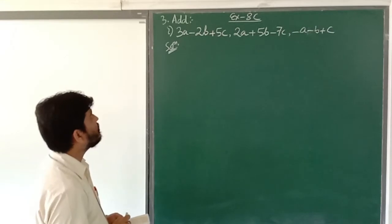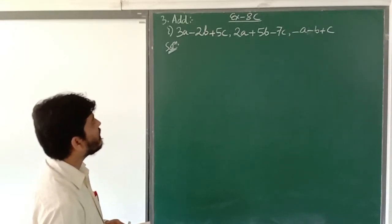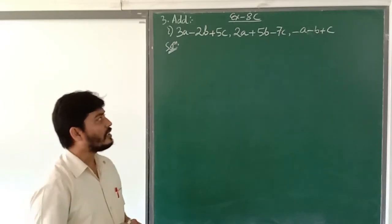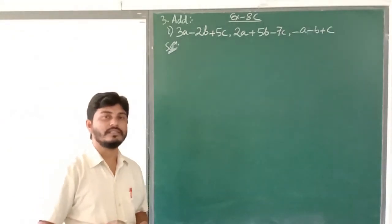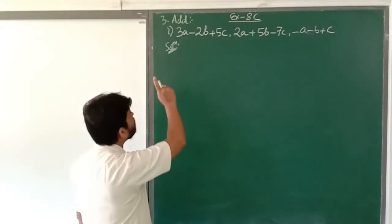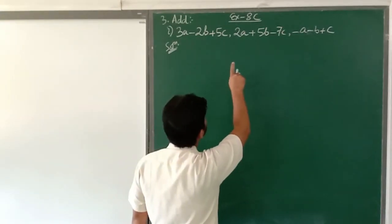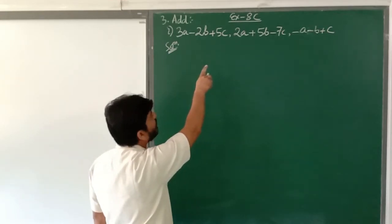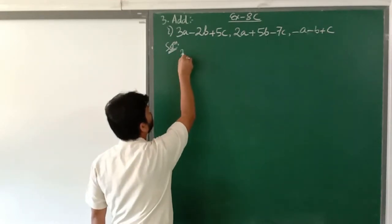The question says: add the expression 3a minus 2b plus 5c, then a second expression 2a plus 5b minus 7c, and the third expression is minus a minus b plus c. Now since we have to add, as you see between every two expressions there is a comma.